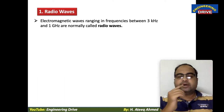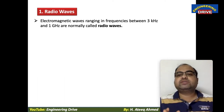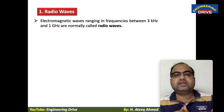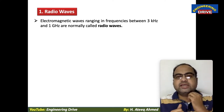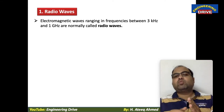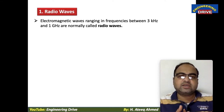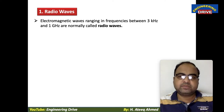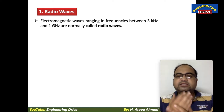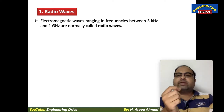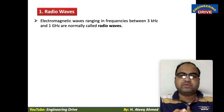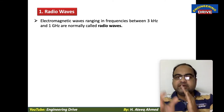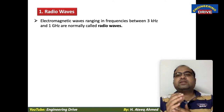Electromagnetic waves ranging in frequencies between 3 kHz and 1 GHz are normally called radio waves. So when the electromagnetic wave frequency is ranging between 3 kHz and 1 GHz, it is classified as a radio wave.